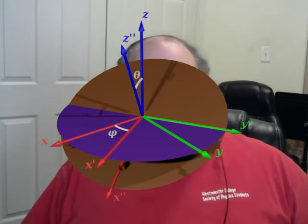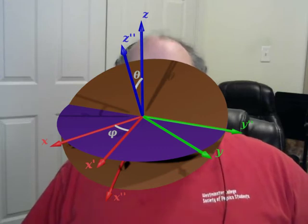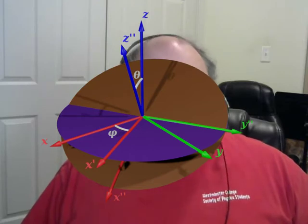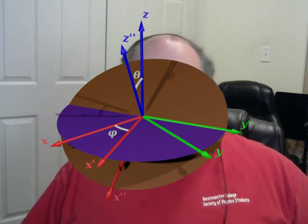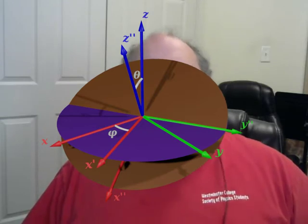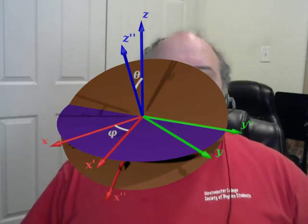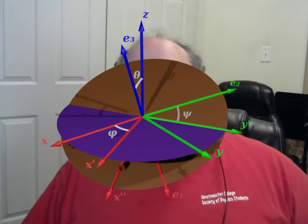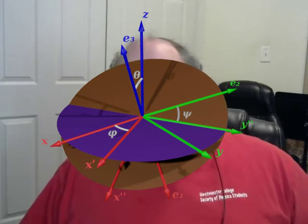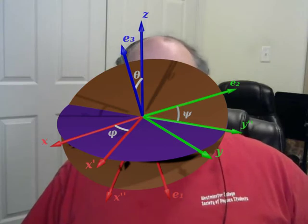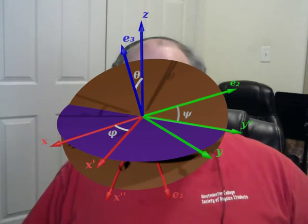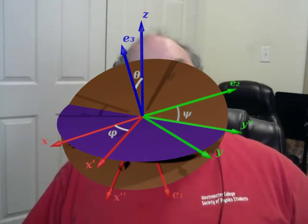One more rotation: we rotate around the z-double-prime axis. When I first learned about this, I thought, why are we rotating around z again? But we're not — we're rotating around z-double-prime, which is not the same as z. We rotate by psi around z-double-prime. When all is said and done, these three angles phi, theta, and psi — with theta from 0 to pi, phi from 0 to 2pi, and psi from 0 to 2pi — can orient anything in any direction.